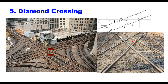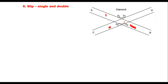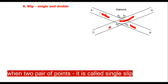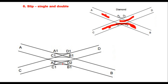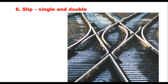In a diamond crossing, a vehicle coming from one direction can go straight, but it cannot be transferred to a crossing track. To provide that facility, an arrangement called a slip is used. On a diamond crossing, additional rails and points are provided so a vehicle can be diverted. A single slip provides the facility for turning a vehicle coming from only one direction. If two more points are provided, it is called a double slip, allowing a vehicle from direction C to go to B or D, and from A to go directly to B or to be transferred to D.